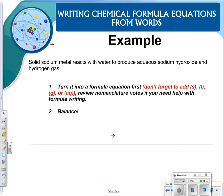So here's an example of the type of problem we may give you. It says solid sodium metal reacts with water to produce aqueous sodium hydroxide and hydrogen gas. So the first thing we're going to do is turn it into a formula equation. And it says don't forget to add solid, liquid, gas, or aqueous. So let's take this piece by piece. It says solid sodium. So sodium is Na. It's not one of our diatomics, so we don't need to put a subscript, but we do need to label it S for solid.